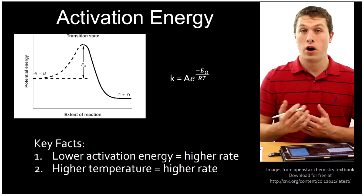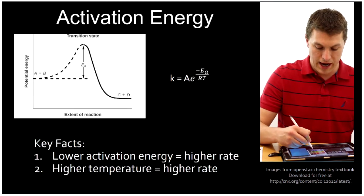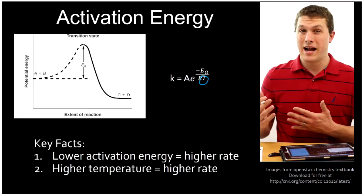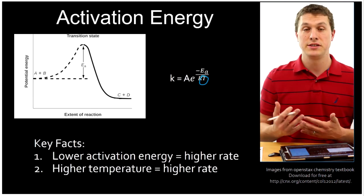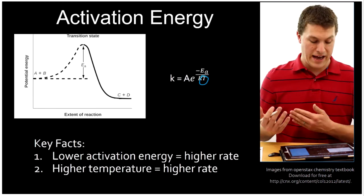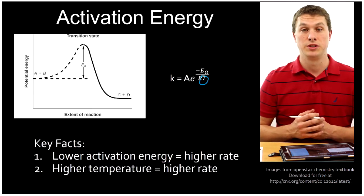A higher temperature also means a higher rate. So you'll notice tucked away in our rate constant is not only our activation energy, but also temperature. And so rate constants are actually not constant at different temperatures. If you change the temperature, you change the rate constant. In general, the higher the temperature, the faster the rate. Now there's tons of math problems you can do with the Arrhenius equation.